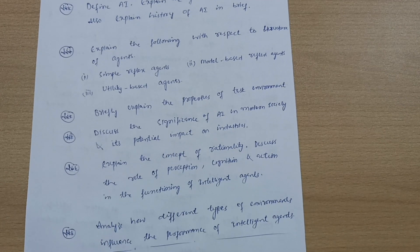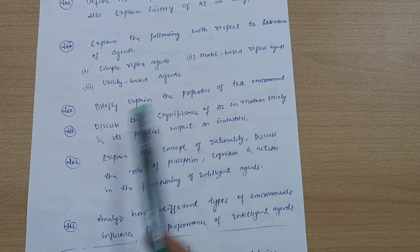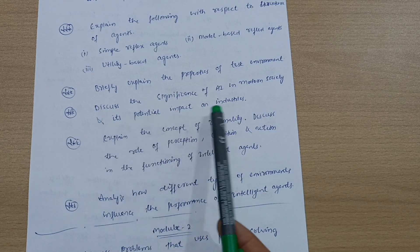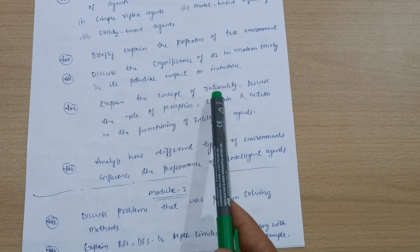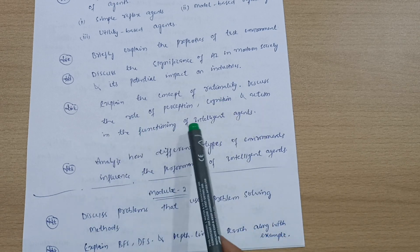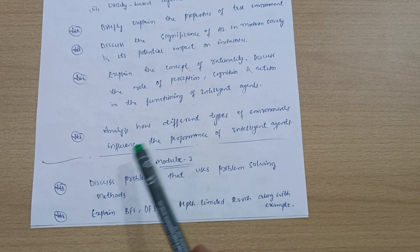Next question is: Briefly explain the properties of task environment. Discuss the significance of AI in modern society and its potential impact on industries. Explain the concept of rationality. Discuss the role of perception, cognition, and action in the functioning of intelligent agents. Analyze how different types of environments influence the performance of intelligent agents.